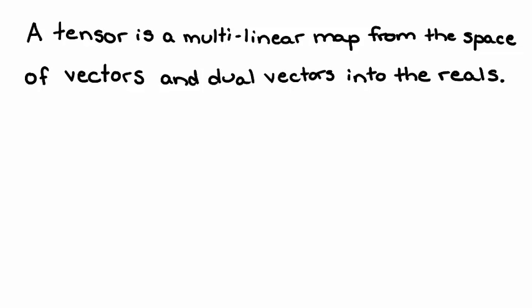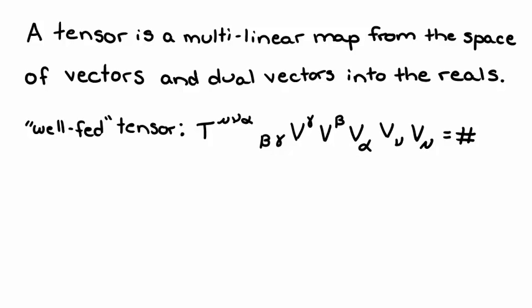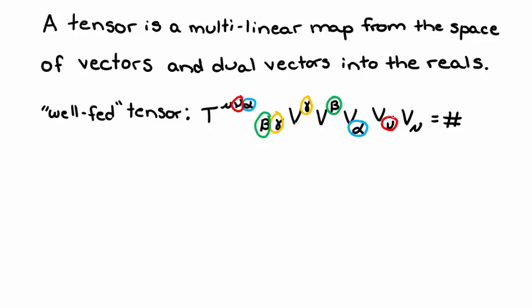Let's try to break down what this means by considering what we'll call a well-fed tensor. A well-fed tensor is a tensor where we feed each of the lower indices a vector and each of the upper indices a dual vector, such that all the indices, in this case gamma, beta, alpha, nu, and mu, are all contracted, and the resulting quantity is a scalar.